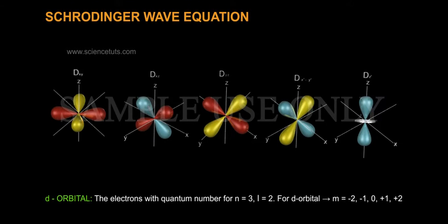D orbital: The electrons with quantum number n equals 3, l equals 2. For D orbital, M equals minus 2, minus 1, 0, plus 1, plus 2.